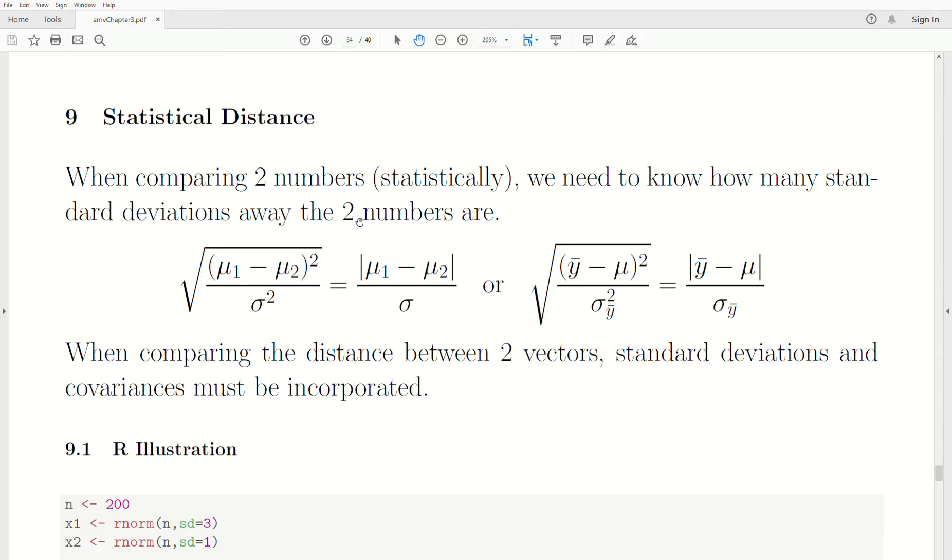Here when we're comparing two numbers statistically, we want to know how many standard deviations the two numbers are apart. So if we have two means divided by the standard deviation, this is how many standard deviations they are apart. On the left side of the equation, I take the square root of the squares, and it ends up being this on the right side. But I do this for later sections to be consistent. So here if we want to see how close the sample mean is to the population mean in terms of standard errors of the mean, then this would be our formula.